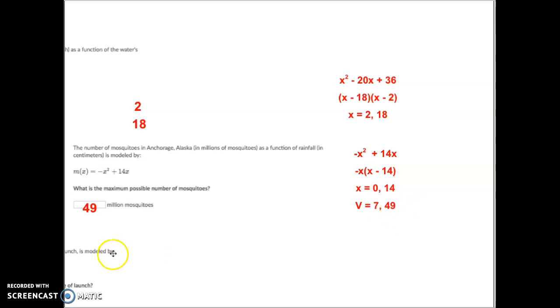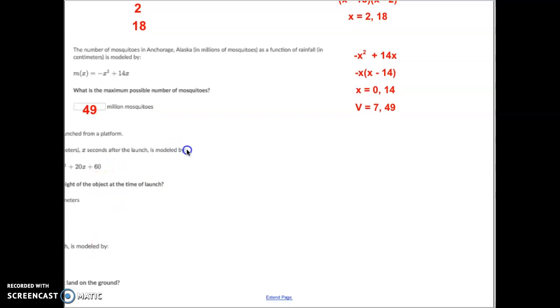Let's do the very next one. An object is launched from a platform. Its height in meters x seconds after launch is modeled by this equation. What is the height of the object when it was launched? Well, in this case they're telling you the height of it when it was launched - basically they're meaning what is the y-intercept of this equation. The y-intercept of this one is just quite simply 60 meters.